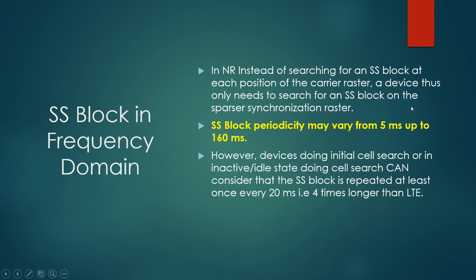The SS block periodicity may vary from 5ms to 160ms. However, when a device is doing the initial search or is in an inactive/idle state during cell search, it can consider that the SS block is repeated at least once every 20ms — which is four times longer than LTE. There are many things depending on this periodicity which will be covered further.